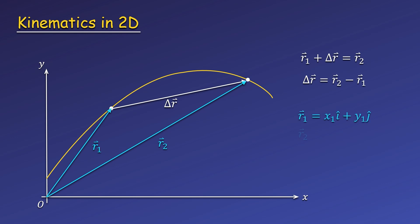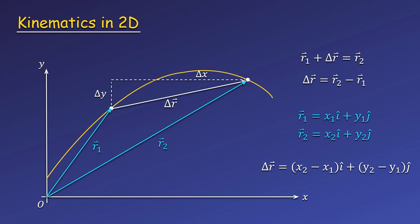We can represent each position vector in Cartesian form using its components and unit vectors. Writing the displacement vector in the same way by subtracting these position vectors, the components of displacement are just delta x and delta y — displacement in the x direction and displacement in the y direction.